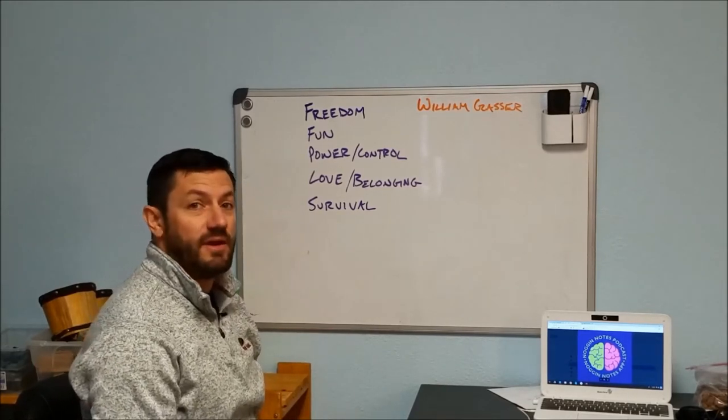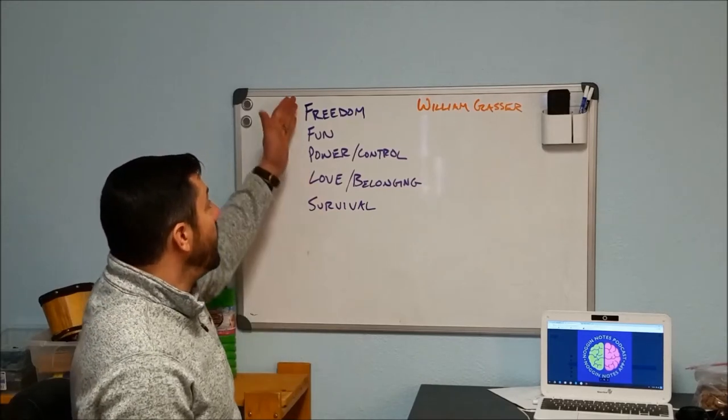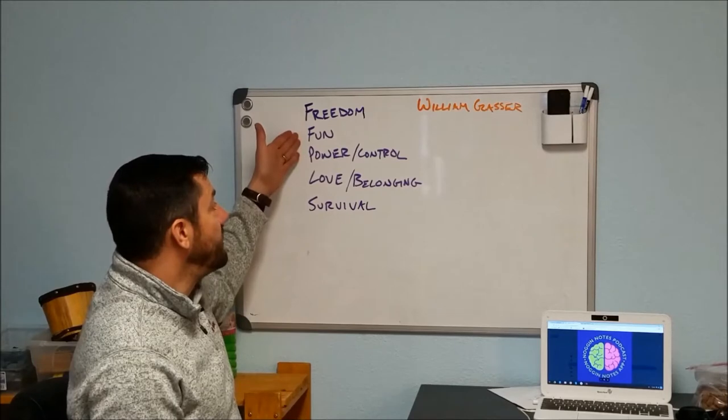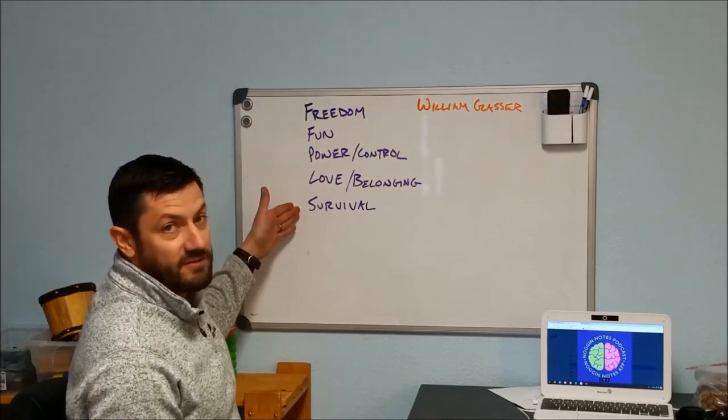But virtually everything else comes with a choice. What he said is that all human behavior comes down to meeting one or more of these five basic needs. We have freedom, fun, power and control, love and belonging, and survival.